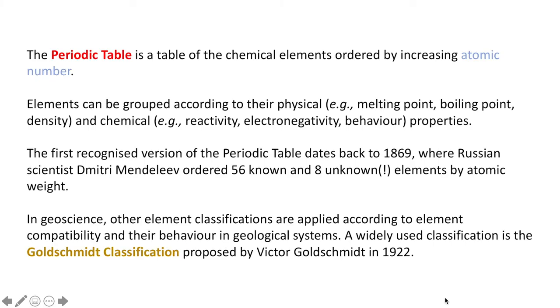The periodic table is a table of the chemical elements ordered by increasing atomic number. Elements can be grouped according to their physical properties, like melting point and boiling point, and chemical properties, like reactivity and electronegativity. The first recognized version of the periodic table dates back to 1869, where Russian scientist Dmitry Mendeleev ordered 56 known and 8 unknown elements by atomic weight. In geoscience, other element classifications are applied according to their behavior in geological systems. A widely used classification is the Goldschmidt classification proposed by Victor Goldschmidt in 1922.